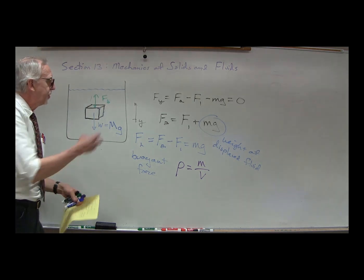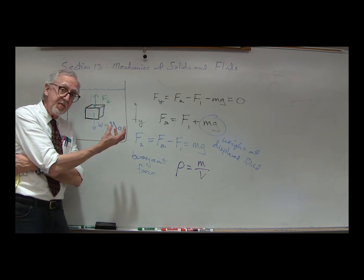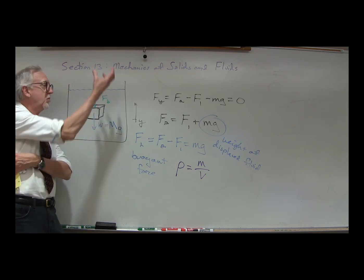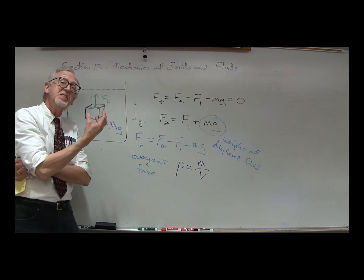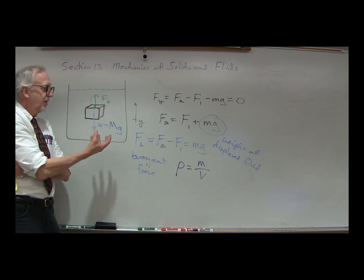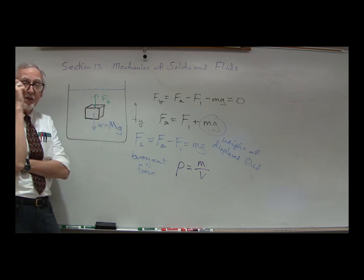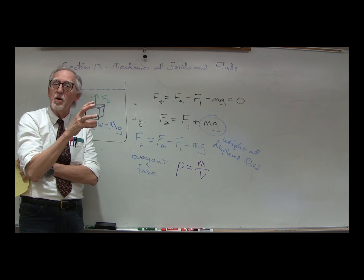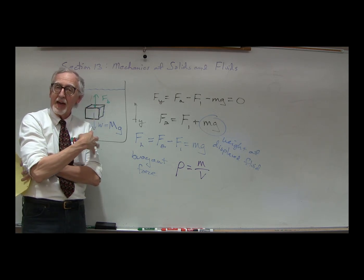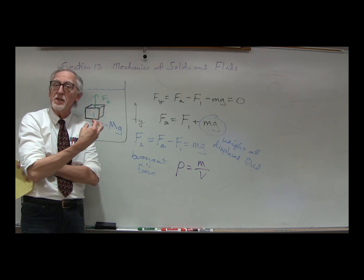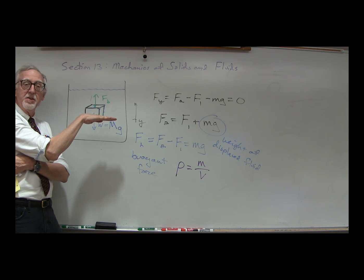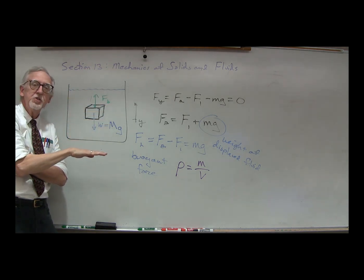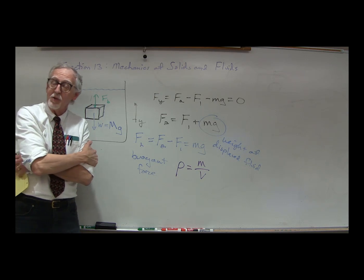If its density is greater than the density of water, it sinks. If its density is less than the density of water, it rises to the surface. If the density is the same as the density of water, it just stays right where it is. That's interesting because fish have what's called a flotation bladder, where they can compress or decompress gases to change their density. If the fish wants to go up, it decreases its density; if it wants to sink, it increases its density.